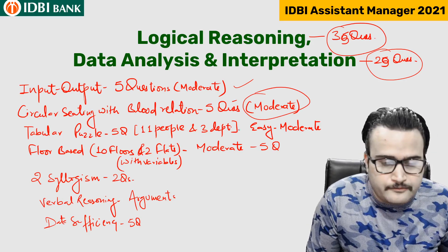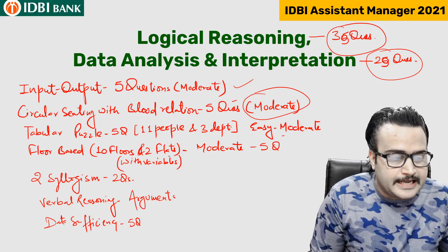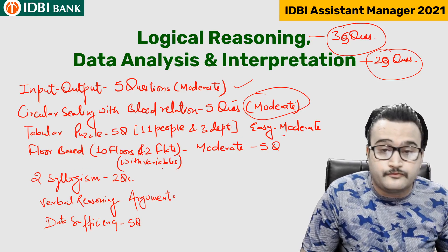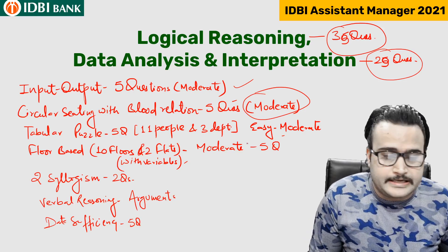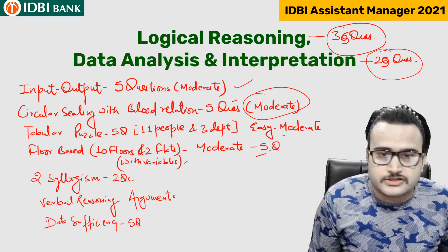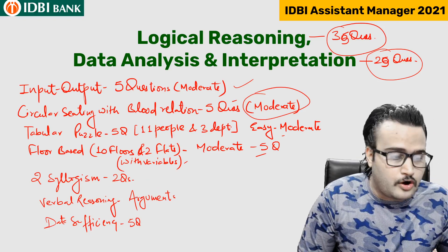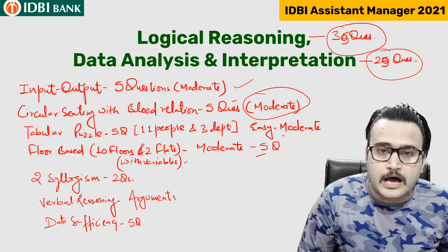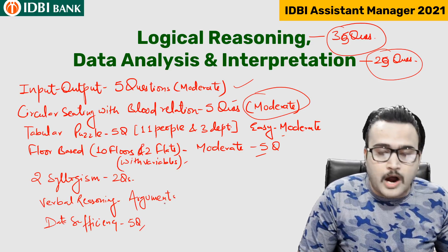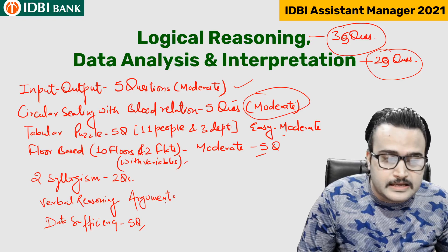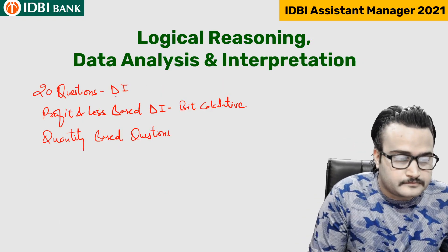Tabular puzzle — very easy in nature, 5 questions with 11 people and 3 departments, easy to moderate. Floor-based puzzle — 10 floors and 2 flats with variables, moderate in nature, 5 questions. Syllogisms — 2 questions. From verbal reasoning, argument-based questions were there. Data sufficiency questions were also encountered in the reasoning section.